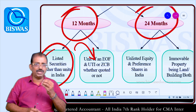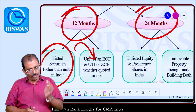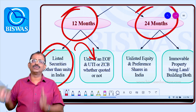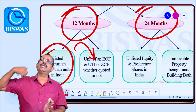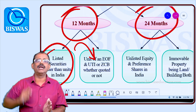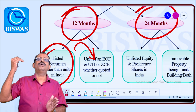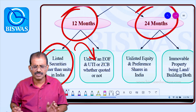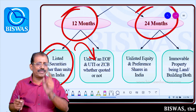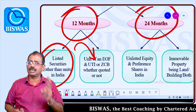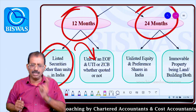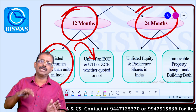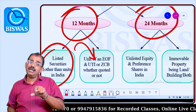For units — equity-oriented fund units, Unit Trust of India units, and zero coupon bonds — whether quoted or unquoted, the holding period is 12 months. So listed securities other than units: 12 months. Units of equity-oriented funds and UTI: also 12 months, regardless of whether quoted or unquoted.